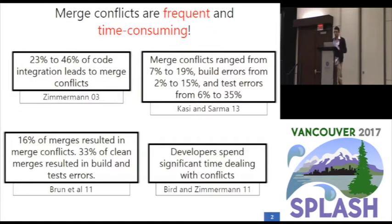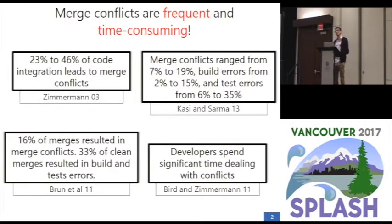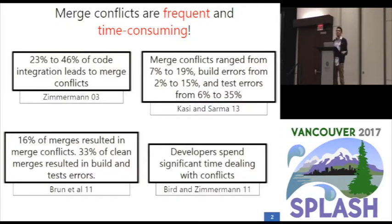Our context is collaborative software development in which merge conflicts might be a frequent problem. Zimmerman described that merge conflicts happen in a range from 23% to 46% of all file integrations. Kaz, Zimmerman, and Brun et al. also found that merge conflicts happen in an average of 50% of all merge situations, and that 31% of merge scenarios free of merge conflicts still had build or behavioral errors.